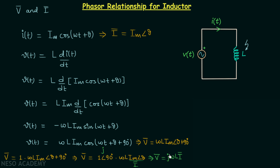So in this way we now have the relation between the voltage phasor and the current phasor. If we want the phasor representation of this circuit, then in place of V(t) we will have V phasor, and in place of I(t) we will have I phasor, which is equal to V phasor over jωL. Now we will move on to the plotting of V phasor and I phasor.